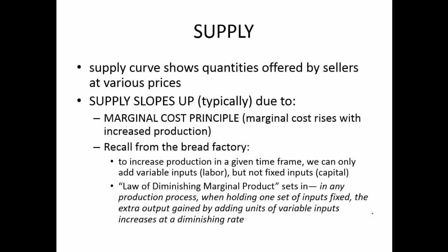Because of this law of diminishing marginal product, we have to pay extra workers the same fixed wage, but they provide less and less additional output. What that works out to in practice is a higher and higher cost of producing extra units of the product in a short period of time.